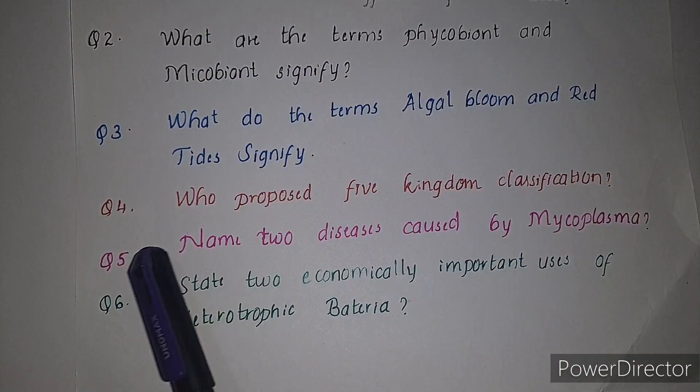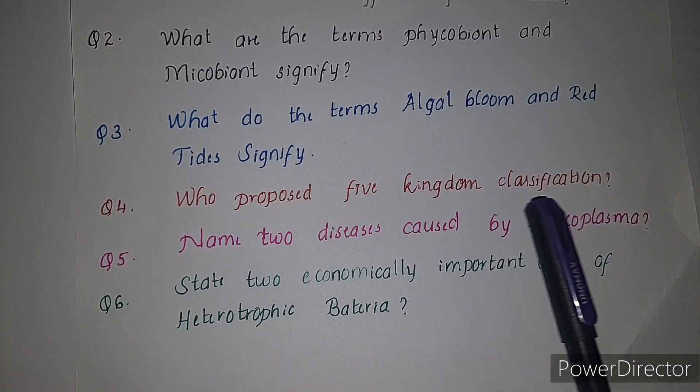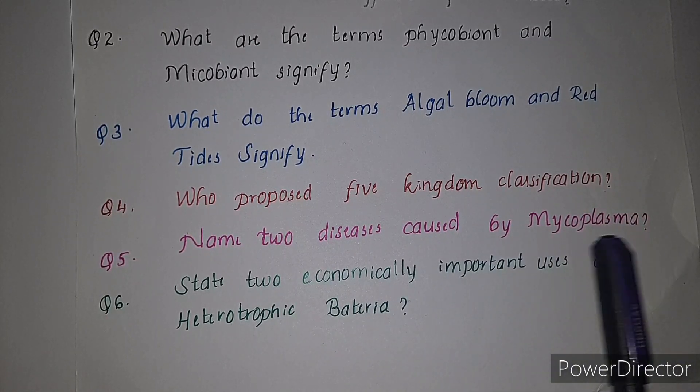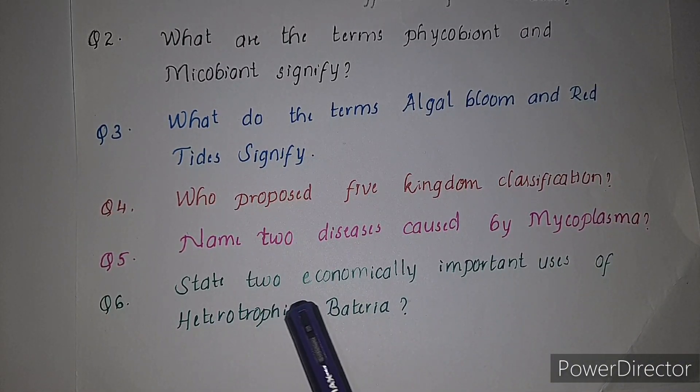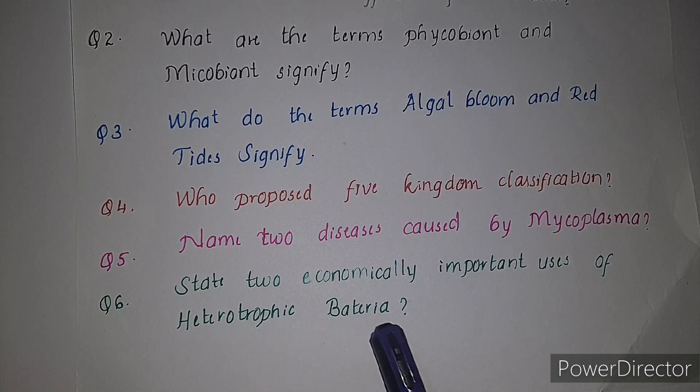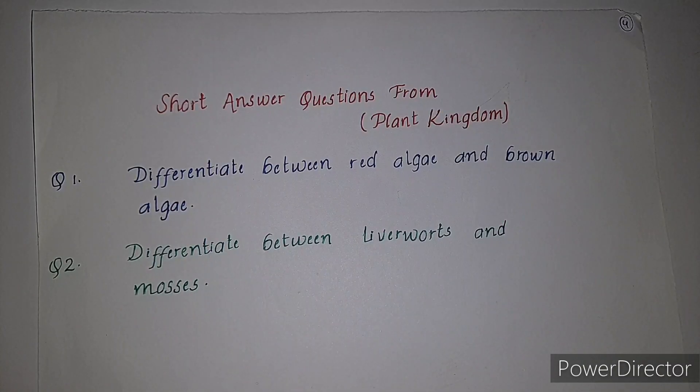Third question: what do the terms algal bloom and red tides signify? Fourth question: who proposed a five kingdom classification? Fifth question: name two diseases caused by mycoplasma. Sixth question: state two economically important uses of heterotrophic bacteria.